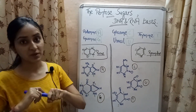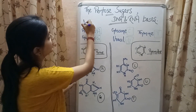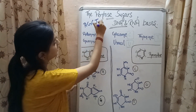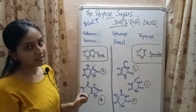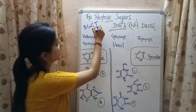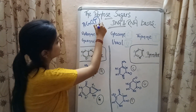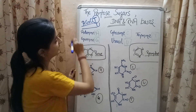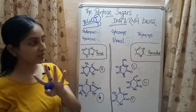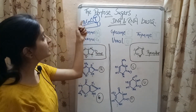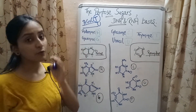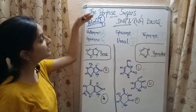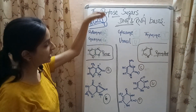In DNA, 4 types of nitrogenous bases are present: adenine, guanine, cytosine, and thymine. Whereas in RNA, instead of thymine, uracil is present and the rest of the 3 bases are the same. So RNA consists of 4 bases — adenine, guanine, cytosine, and uracil — whereas DNA consists of adenine, guanine, cytosine, and thymine.